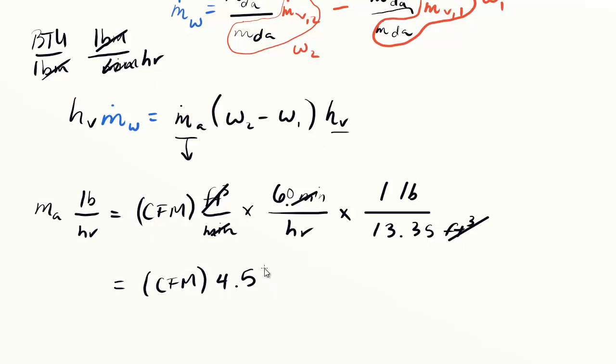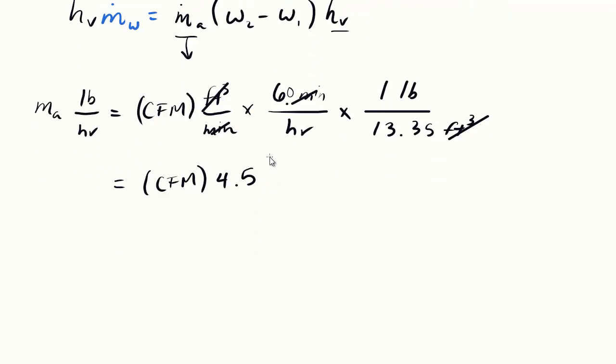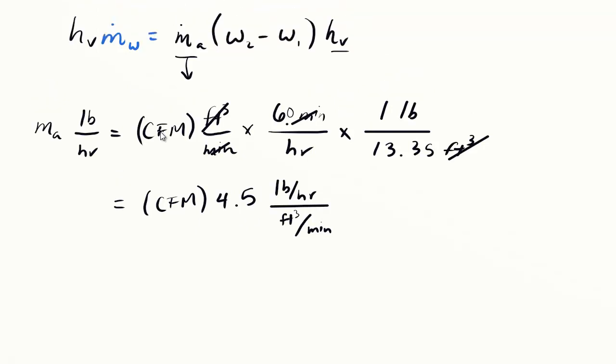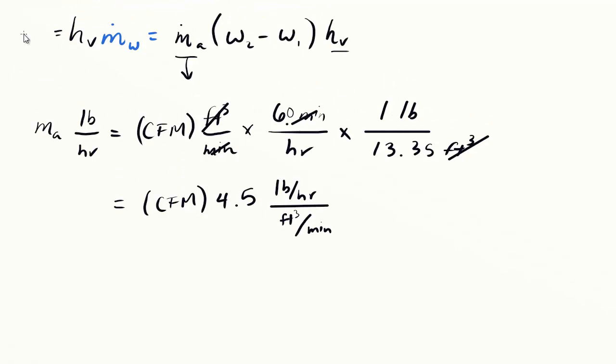The units on this 4.5 are pounds per hour per CFM, though we'll often leave this out in shorthand formulas. The CFM value you put in is in feet cubed per minute, and what you get back is pounds per hour. We can replace the mass flow rate of air with this expression. This is equivalent to our latent load. Q latent in BTU per hour equals 4.5 multiplied by CFM multiplied by delta omega multiplied by the latent heat of vaporization.